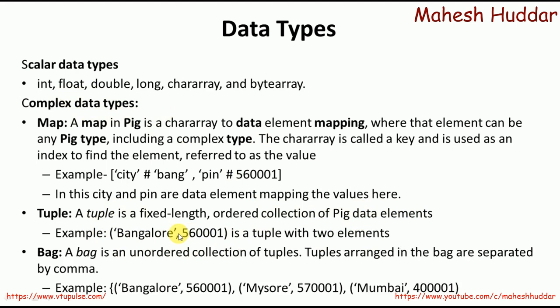The last complex data type is bag. A bag is an unordered collection of tuples. It is a collection of tuples and they do not need to be in any ordered fashion. Each of the tuples in a bag are separated by a comma. For example, this is one tuple, the second tuple, and the third tuple — a bag consisting of three tuples. This is how we can have complex data types in Apache Pig.